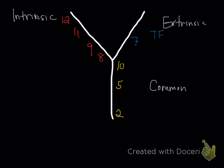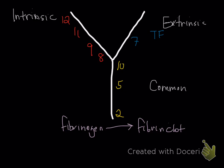The last thing to realize is making the clot — it starts off as fibrinogen. Fibrinogen is converted via factor 2 into a fibrin clot. It starts off as a soluble clot and then becomes insoluble. The other name for factor 2 is thrombin — you may have heard of thrombin before.